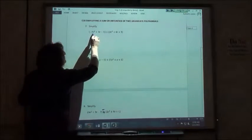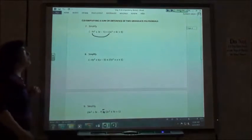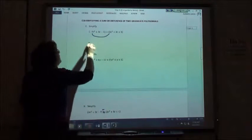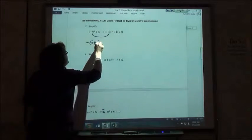And so I'm going to take the negative 7t squared plus the 2t squared. Negative 7 plus 2 would give me negative 5t squared then.